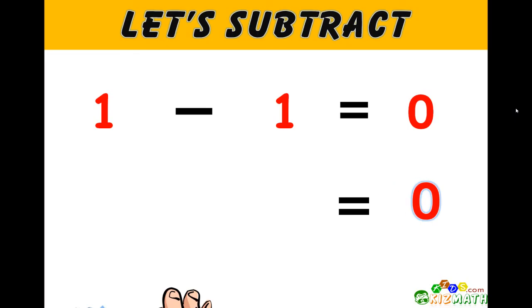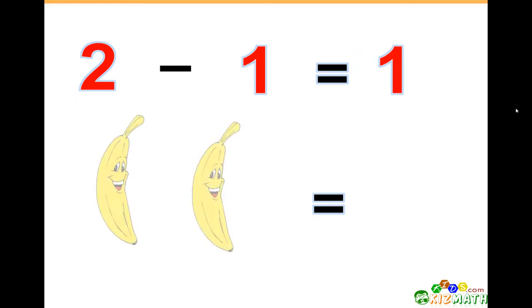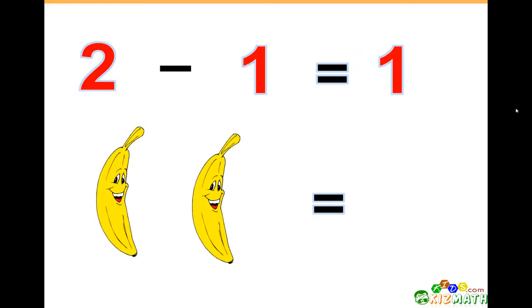2 minus 1 equals 1. If we have two bananas and we take away one banana, we have only one banana left.